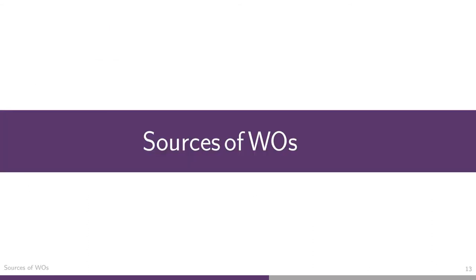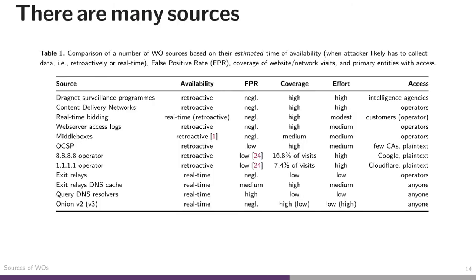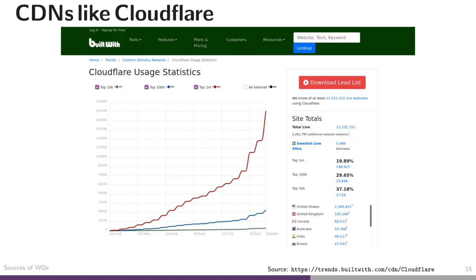Simulated website oracles are very effective at reducing false positives. Let's look at how to concretize website oracles — where can we get one? In the paper we enumerate a large number of sources and evaluate them through some metrics. I would like to highlight three or four sources that we think are particularly troublesome. To begin with, content delivery networks like Cloudflare make perfect website oracles.